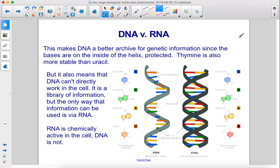This makes DNA a better archive for genetic information since the bases are on the inside of the helix, protected. Thymine is also more stable than uracil. But it also means that DNA can't directly work in the cell. It is a library of information, but the only way the information can be used is via RNA. RNA is chemically active in the cell. DNA is not.